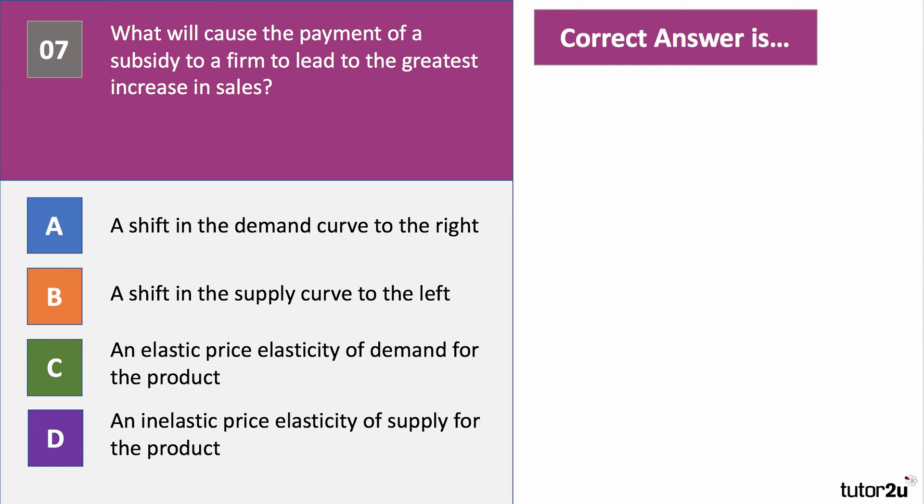Question seven: what will cause the payment of a subsidy to a firm to lead to the greatest increase in sales? Press pause and think it through. When will a subsidy lead to the greatest change in equilibrium quantity sold? The right answer is C — when there's elastic demand. A subsidy shifts the supply curve out to the right, and with very elastic demand a shallow gradient, there'll be a significant increase in quantity as consumers respond to the lower price.